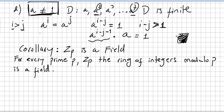I leave you an important corollary — I'm not going to prove it here, but it uses Euclid's lemma. The corollary says: the ring of prime integers is a field. That is, for every prime p, Z_p — the ring of integers modulo p — is a field. It is a very easy proof.